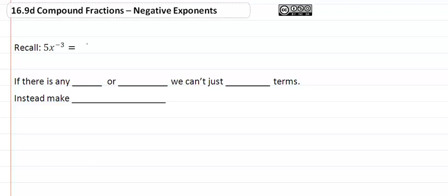16.9d Compound Fractions, Negative Exponents. Recall that 5x minus 3 is equal to 5 over x cubed.